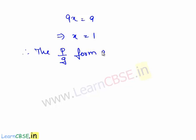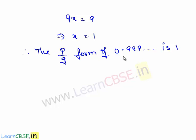Therefore the p by q form of the given decimal expansion 0.999 and so on is 1. We can also say by observation that 0.999 and so on is approximately equal to 1, which is a rational number.